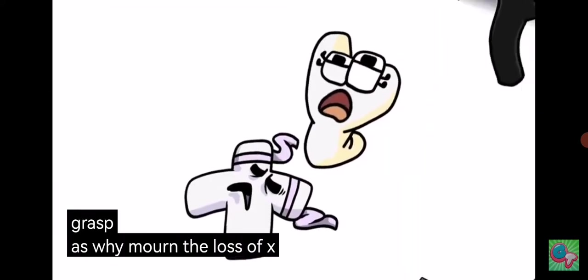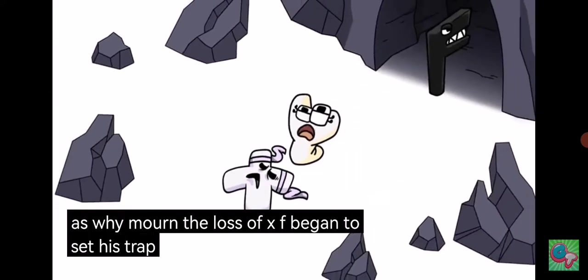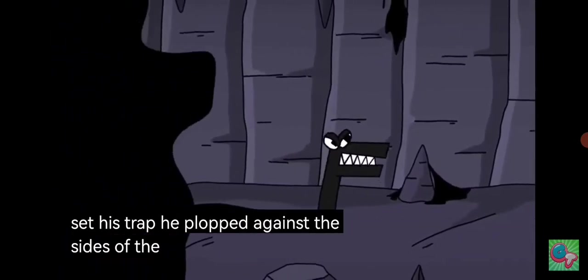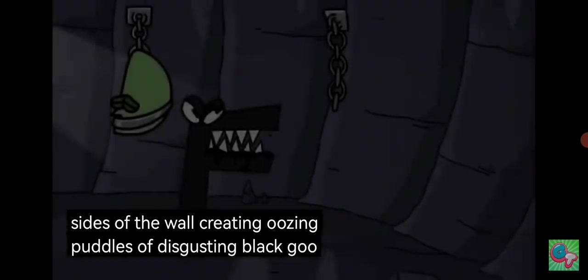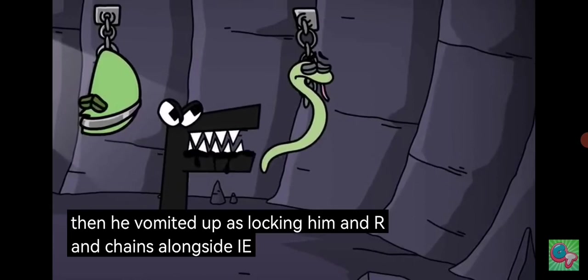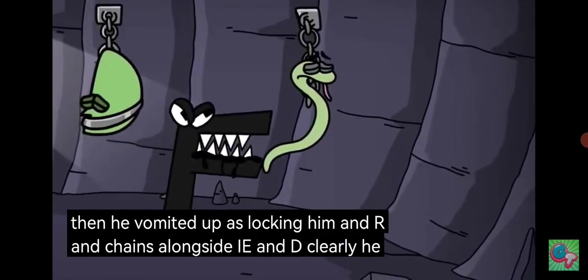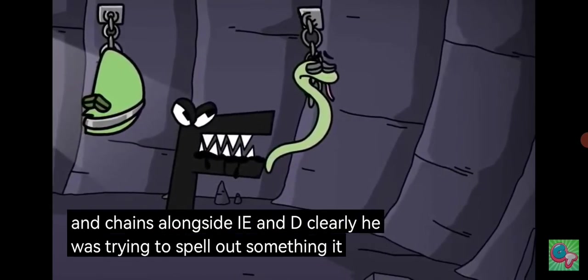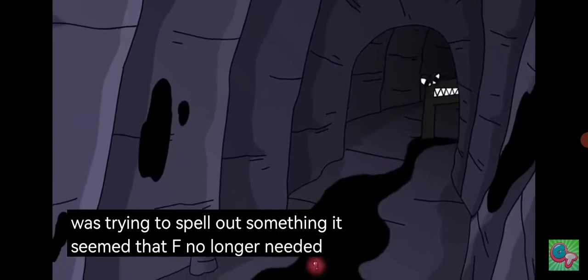As Y mourned the loss of X, F began to set his trap. He plopped against the sides of the wall, creating oozing puddles of disgusting black goo. Then he vomited up S, locking him and R in chains alongside I, E, and D. Clearly he was trying to spell out something.